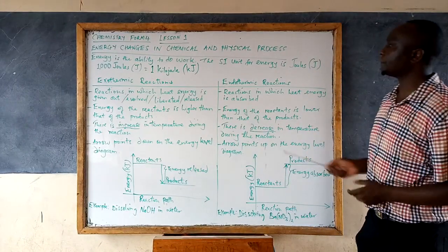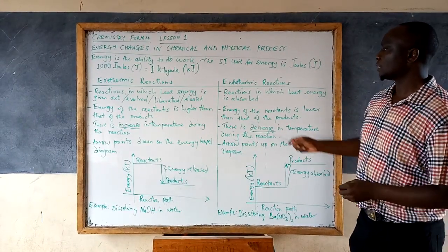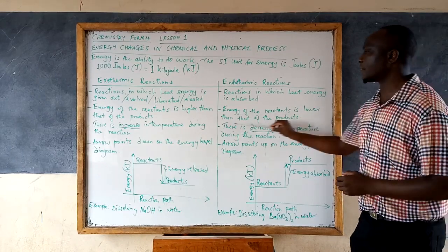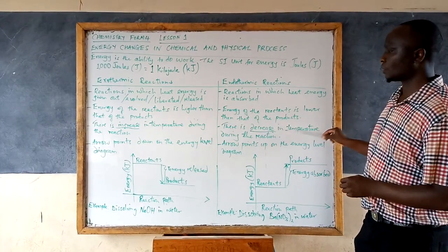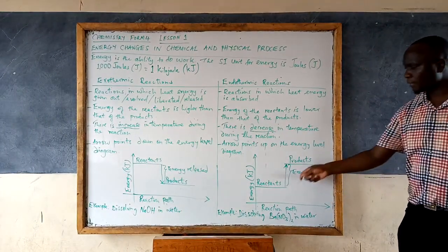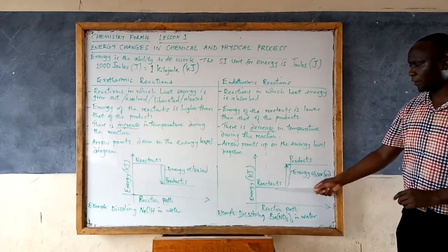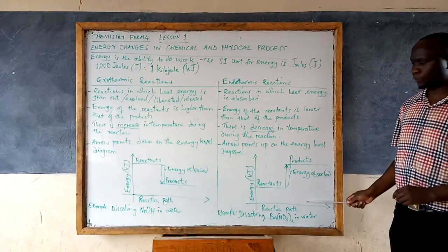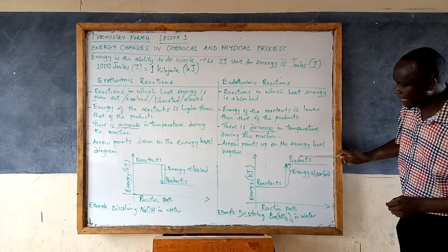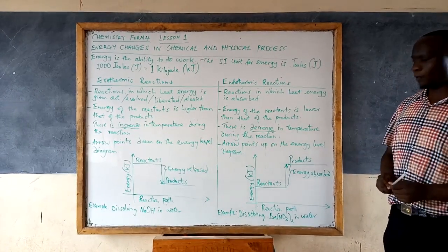On the other hand, for the endothermic reaction, the energy of the reactants is usually lower than that of the products. Looking at an energy level diagram, this represents an endothermic reaction in which you can see the products are at a higher level and the reactants are at a lower level.